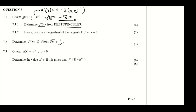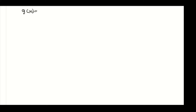Let's find the derivative of this problem using first principles. We write our g(x) which equals 1 minus 4x squared. First principles is written as f prime of x equals the limit as h approaches 0 of f(x+h) minus f(x), all divided by h.